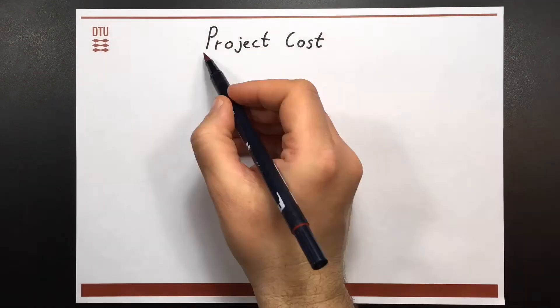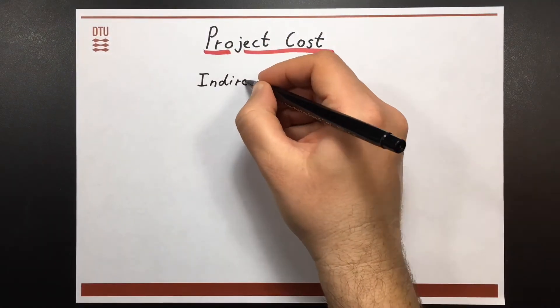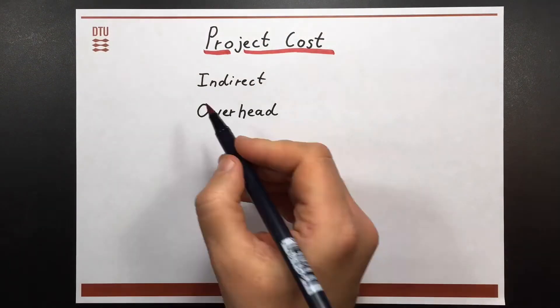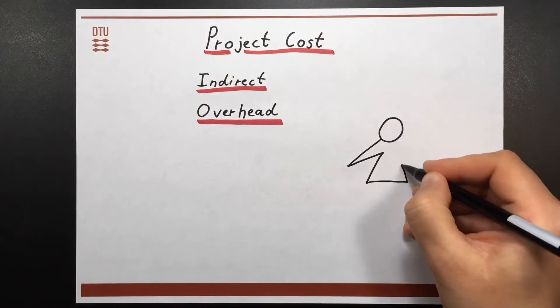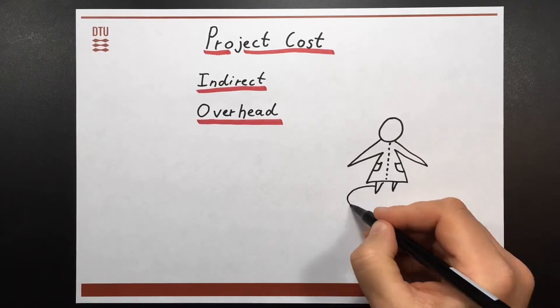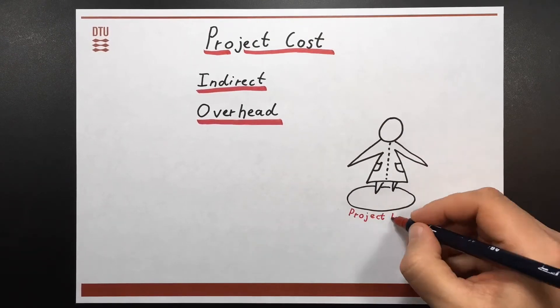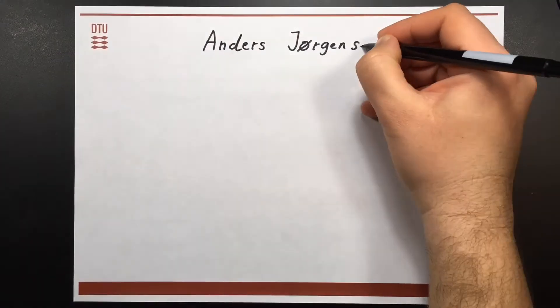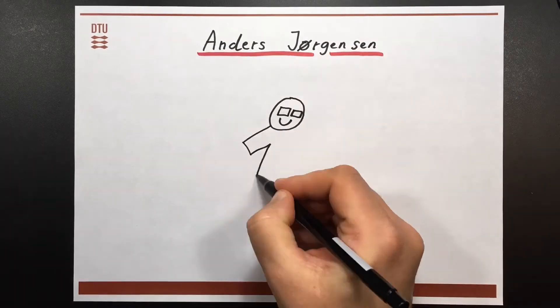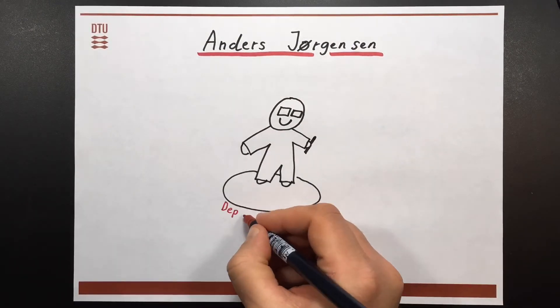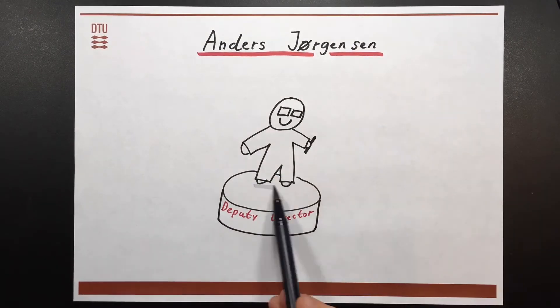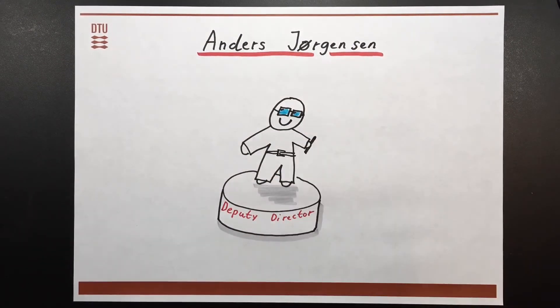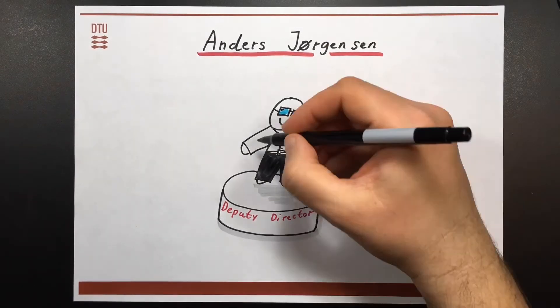In this video, I'll be explaining project costs, differentiate between indirect costs and overhead, and highlight why this is important to you as a NanoLab project leader. Welcome to my corner. I'm Anders Jonsson, deputy director of DTU NanoLab. I made this video to help you by demystifying the different types of project costs.